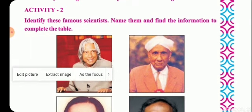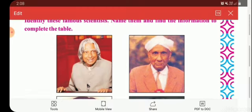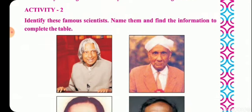Activity 2: Identify these famous scientists, name them, and find information to complete the table. The first picture is of a very famous person we all know — Dr. APJ Abdul Kalam. He was an aeronautical engineer and has launched satellites.